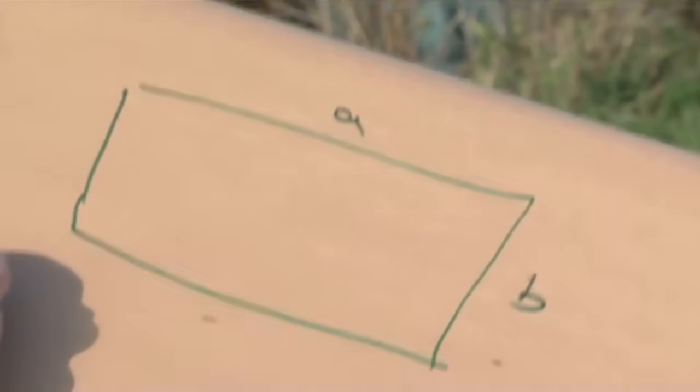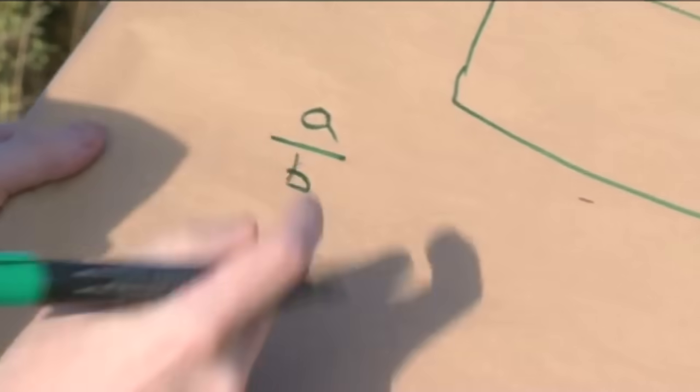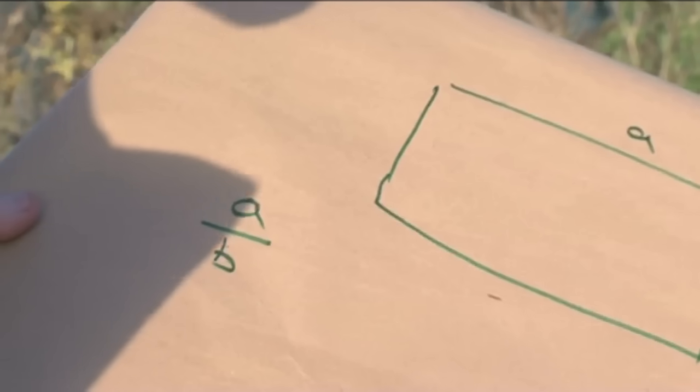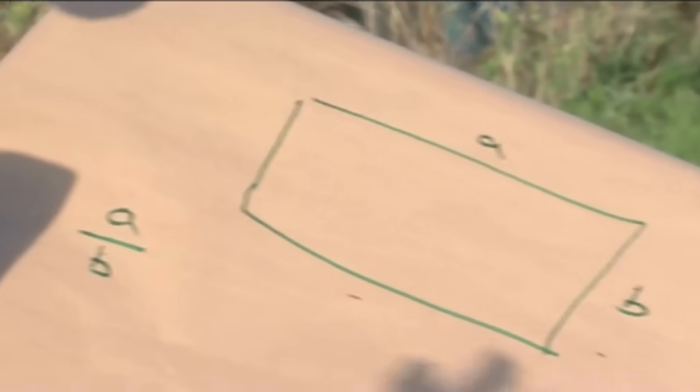Now, if I take the long edge, A, and divide by the short edge, B, I get a ratio. It's actually going to be root 2, but let's pretend we don't know that yet. But this is what I want.